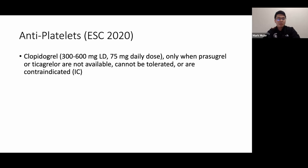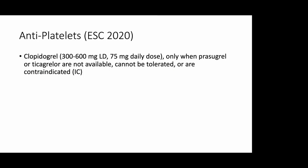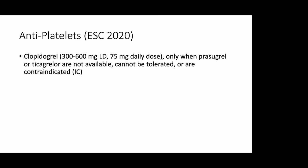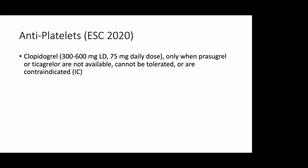ESC 2020 recommends clopidogrel only when prasugrel or ticagrelor are unavailable, not tolerated, or contraindicated. Clopidogrel has less reliable antithrombotic effects and slower onset compared to prasugrel and ticagrelor. Studies show improved outcomes with both prasugrel and ticagrelor, including a mortality benefit with ticagrelor. Both prasugrel and ticagrelor carry higher bleeding risks compared to clopidogrel.